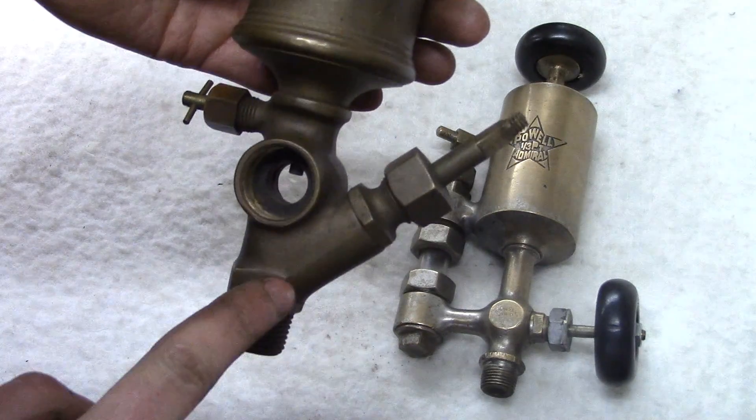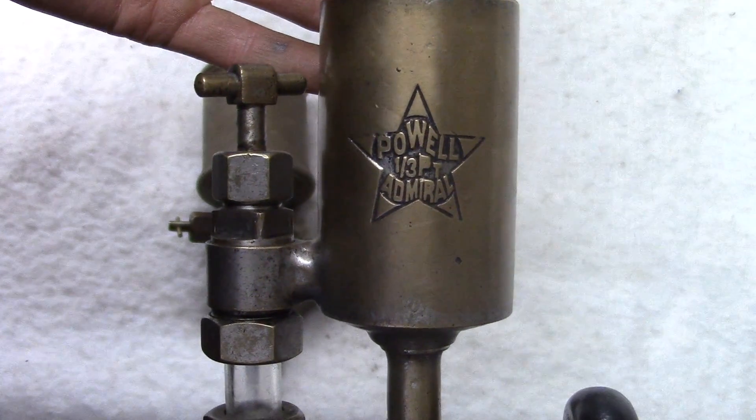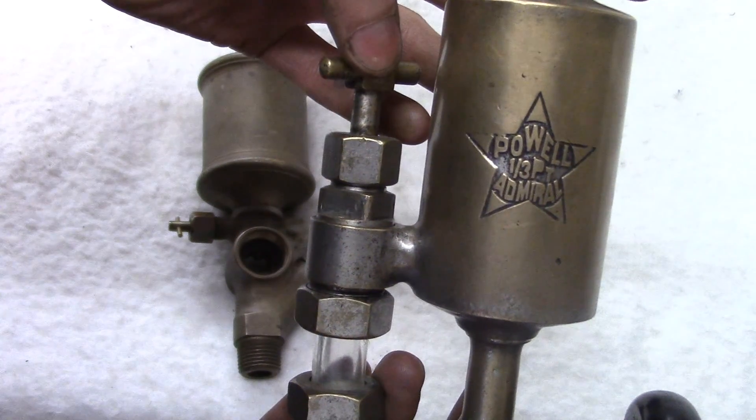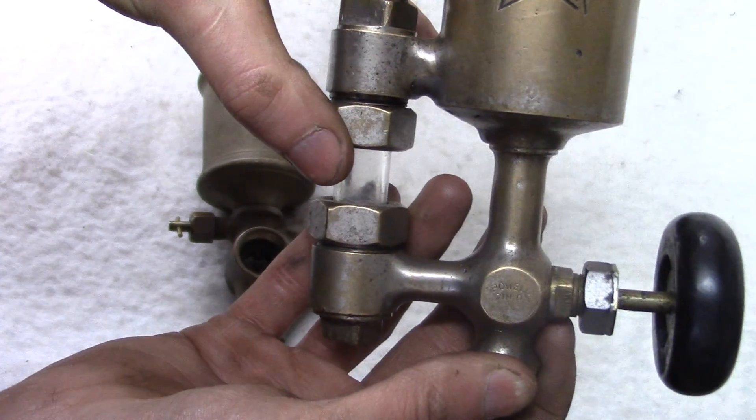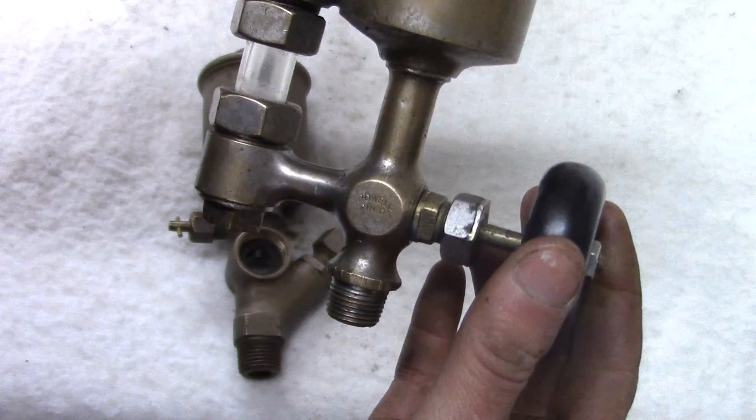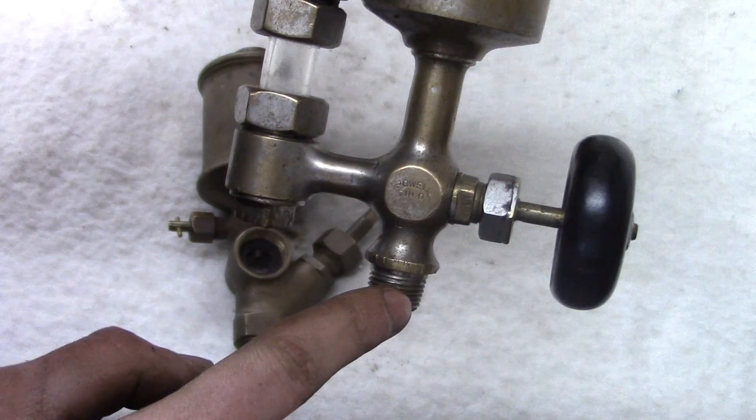This Powell Admiral one-third of a pint oiler also has the same operation. There's a needle valve, a sight glass for the drips, and then a shutoff valve that shuts off the drip inlet from the outlet.